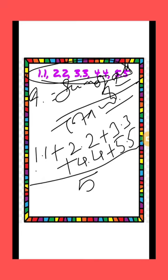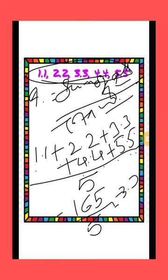1.1 plus 2.2 plus 3.3 plus 4.4 plus 5.5 is equal to 16.5, divided by 5, and it is equal to 3.3.